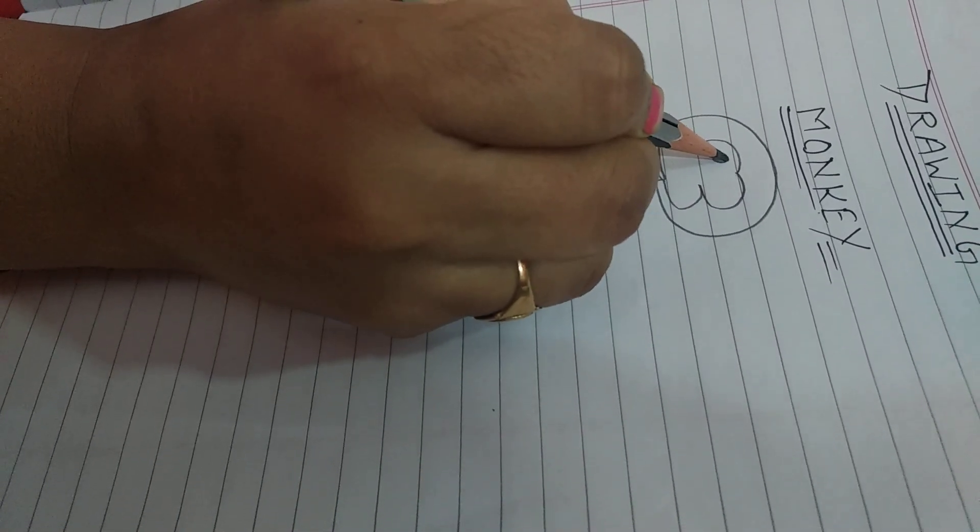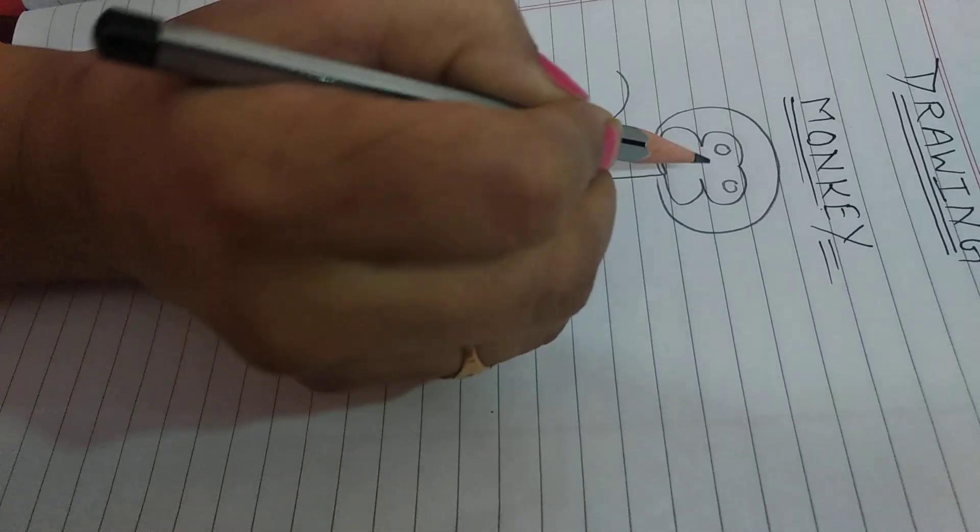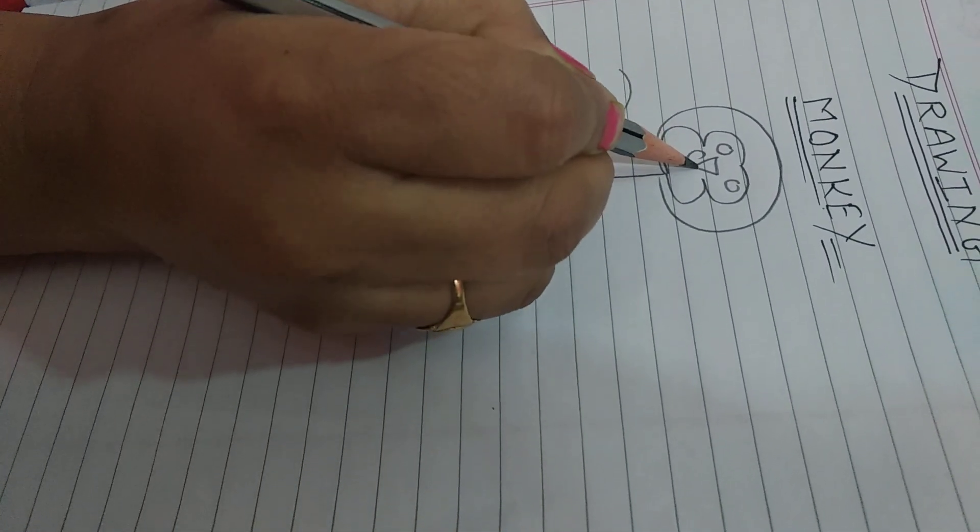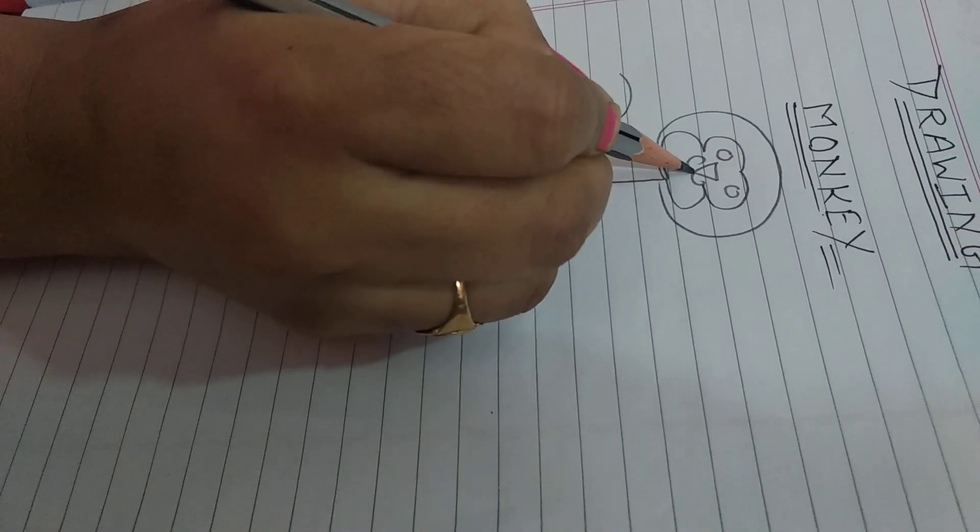Two little small circles, one triangle, one curve, small curve.